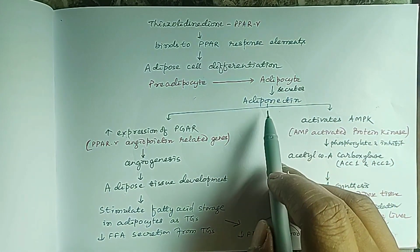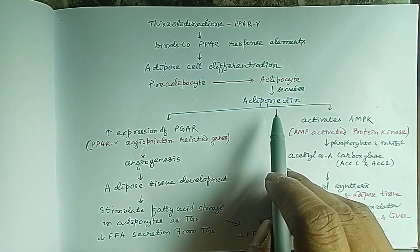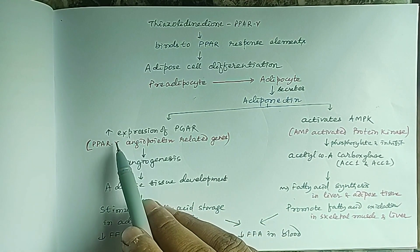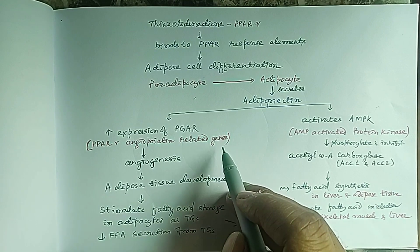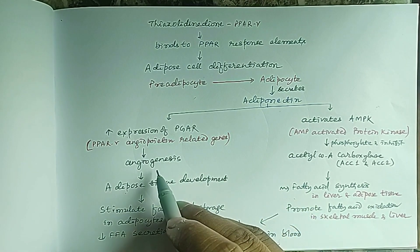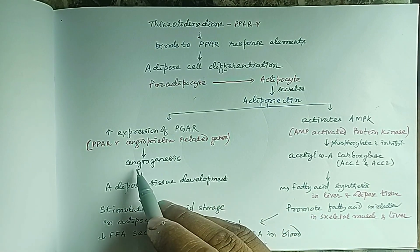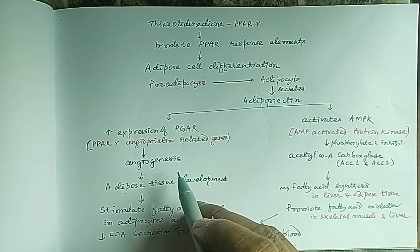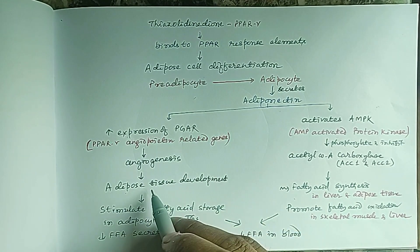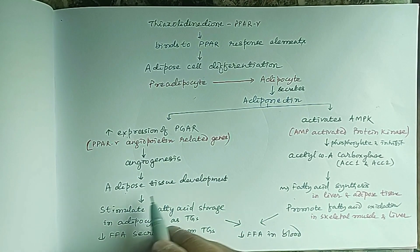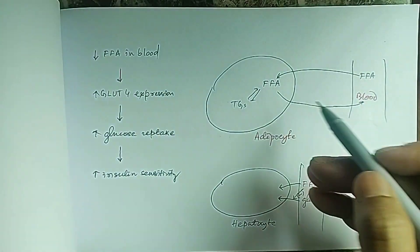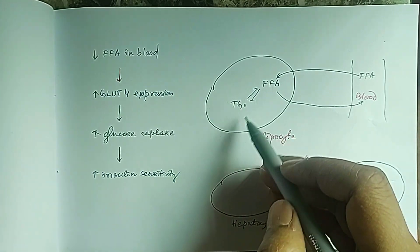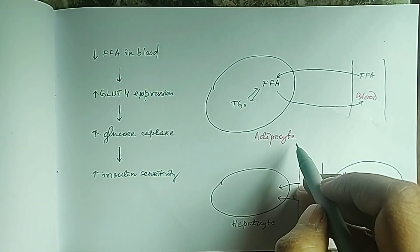Adiponectin has two functions. Number one: it increases the expression of PPAR gamma and angiopoietin-related genes, which causes angiogenesis. Angio means blood vessel and genesis means formation. There will be formation of blood vessels in adipose tissue, which will result in adipose tissue development.